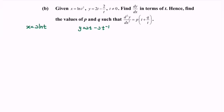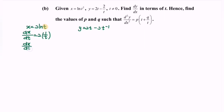For the first part, differentiate x with respect to t. So dx/dt equals 2 times the derivative of ln t, which is 1 over t. Remember to differentiate the internal function, giving 1. Rewriting, dx/dt equals 2 over t.